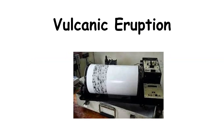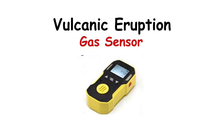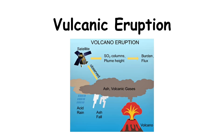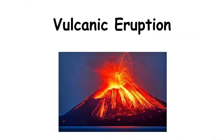Scientists monitor volcanoes using seismographs, gas sensors, and satellite imagery. These tools help detect changes in ground movement, gas emissions, and swelling of the land — signs that an eruption may be approaching.